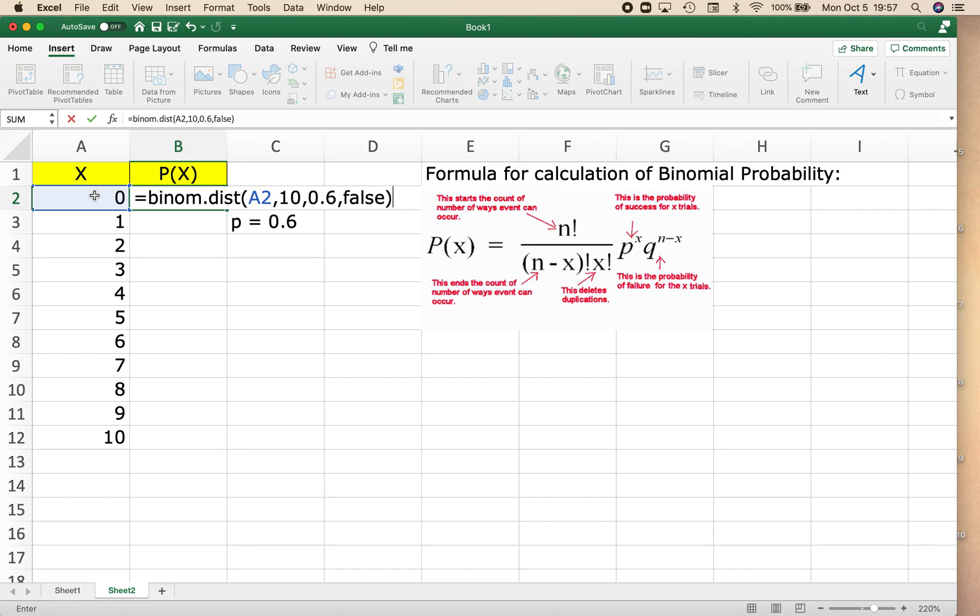So now what I have typed in, equals binom.dist, I clicked on the 0 because that was the first number of successes that I wanted to find the probability for, comma 10, comma 0.6, comma false.